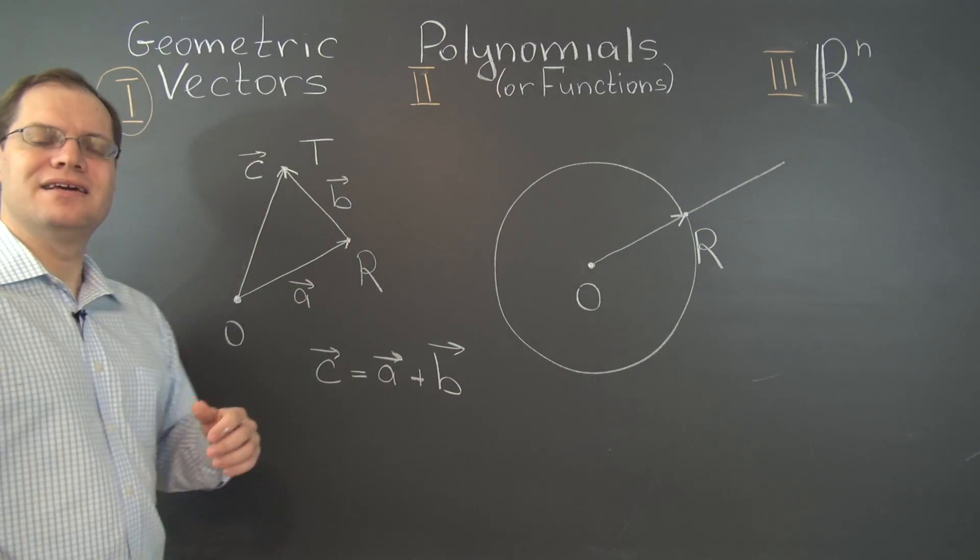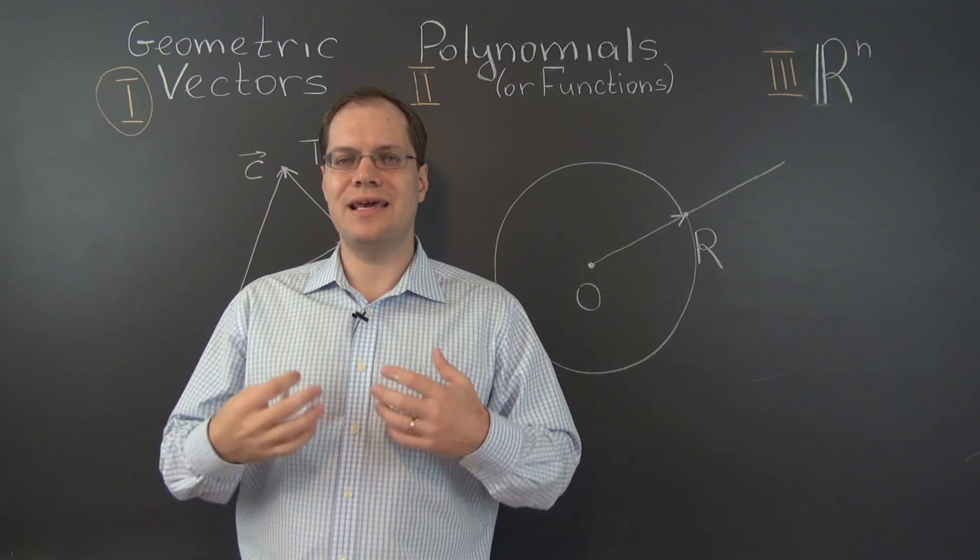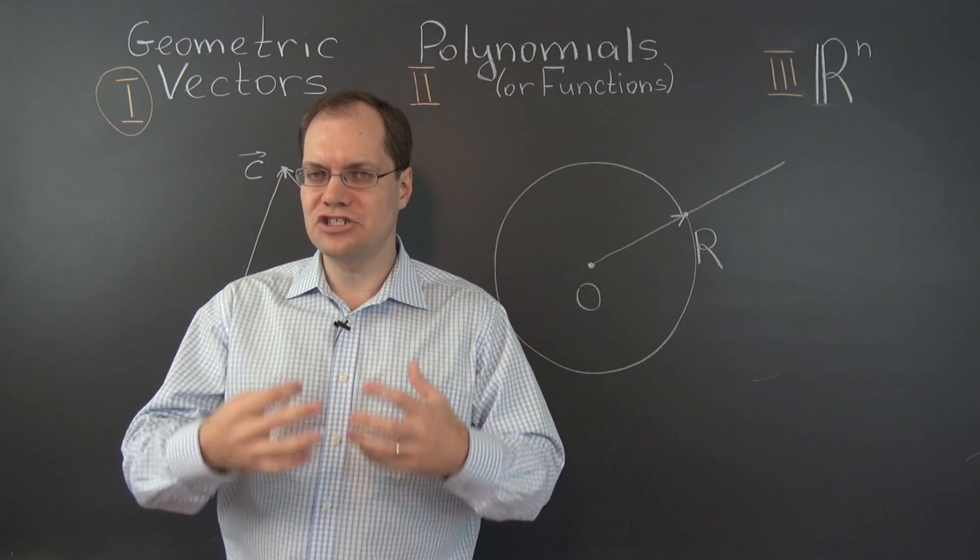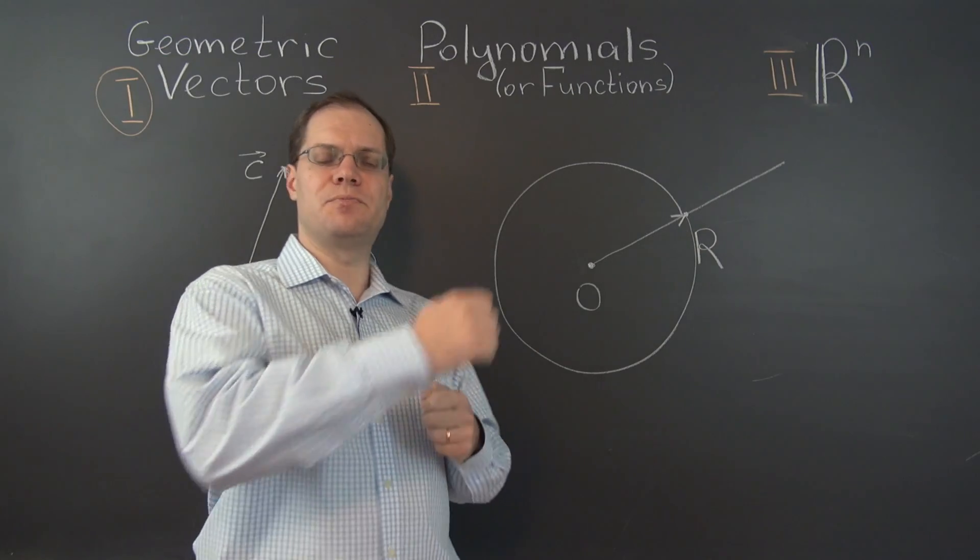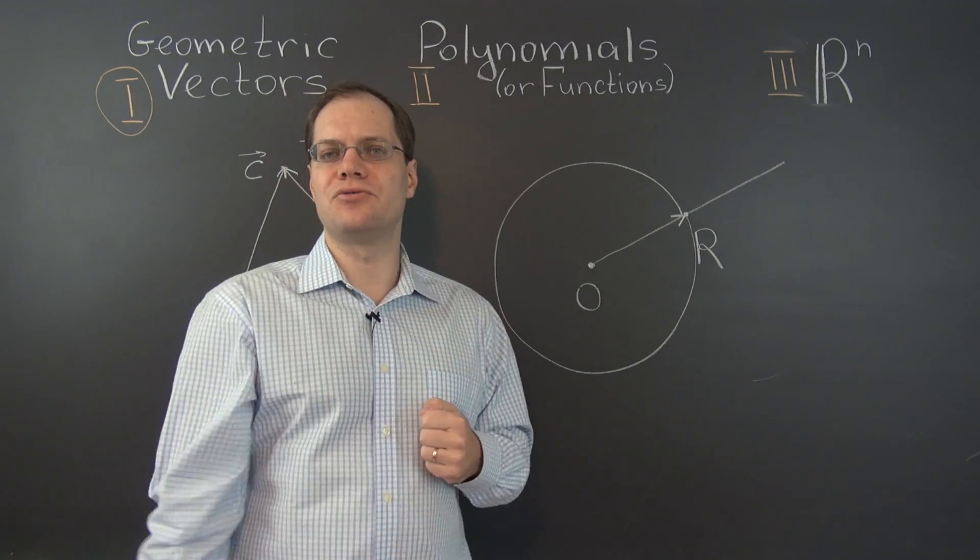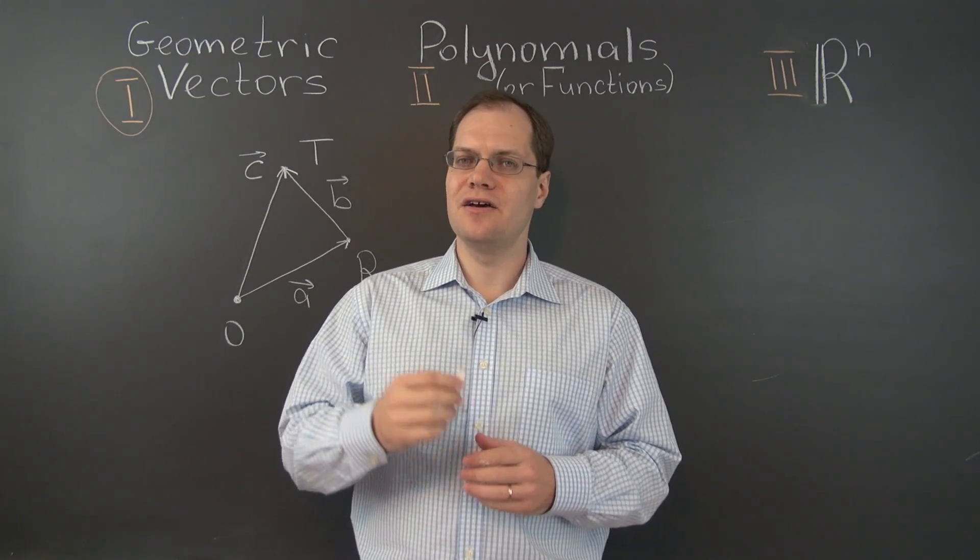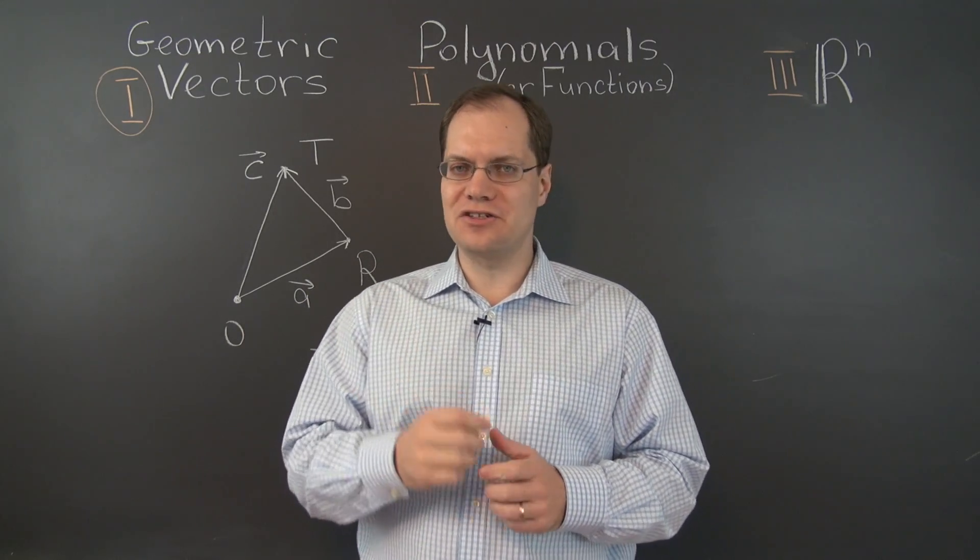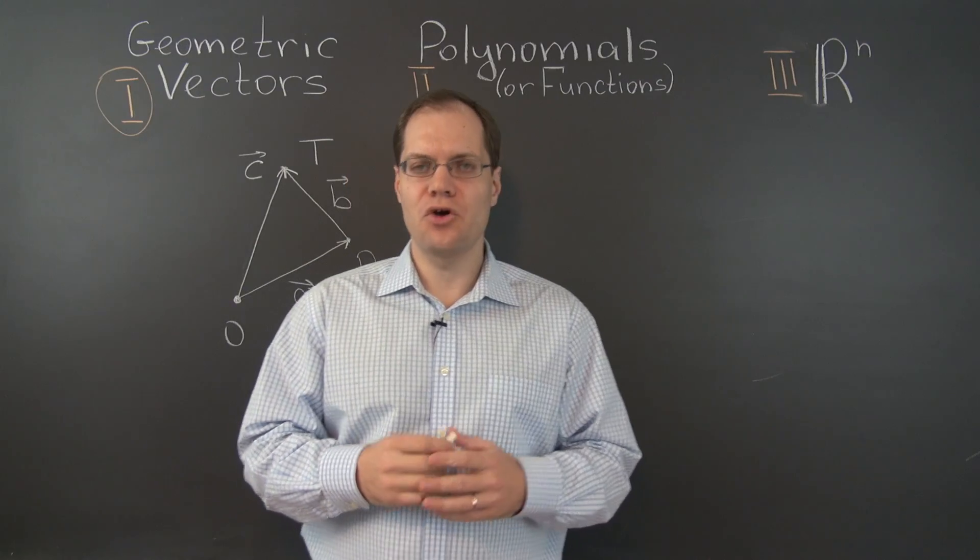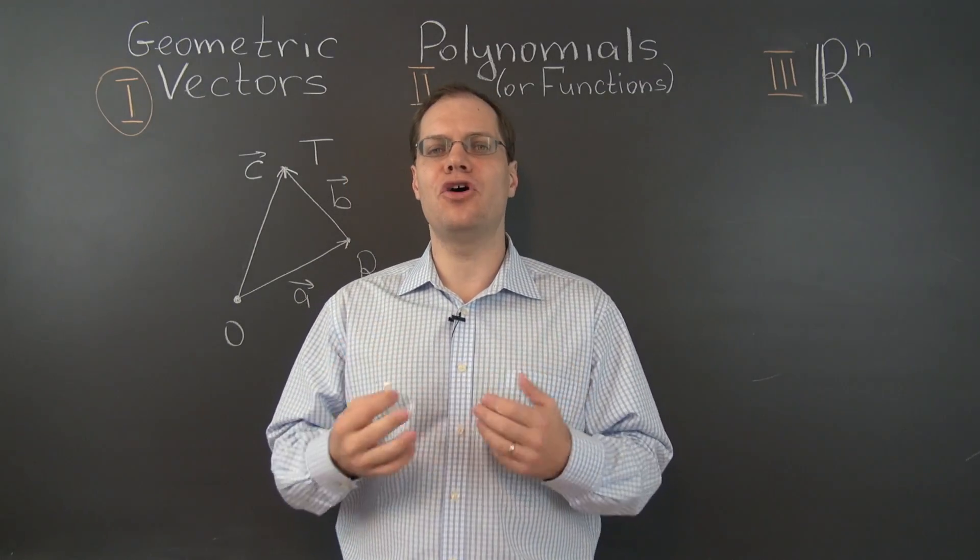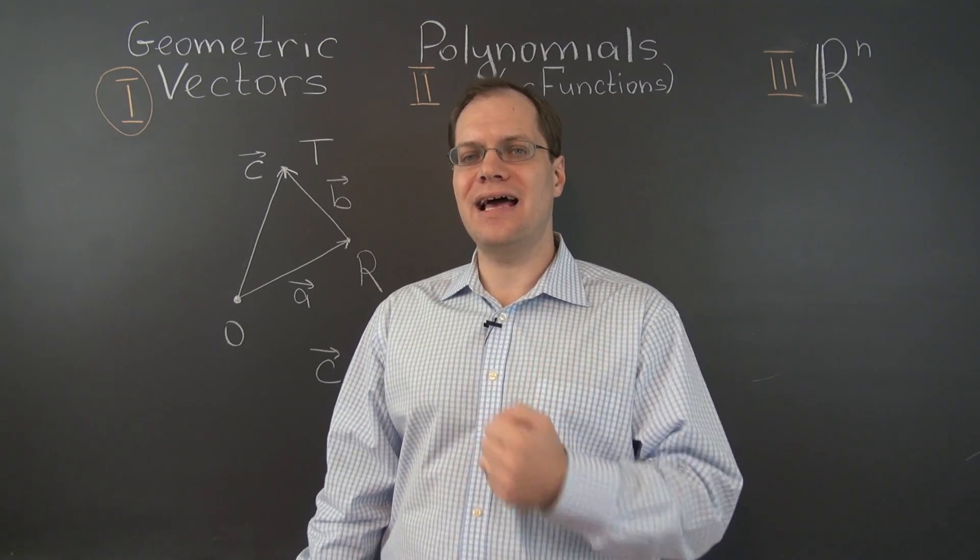A completely natural definition that captures the fact that relating locations, the locations of two points, involves both the distance and the direction. So we're now halfway towards justifying the fact that geometric vectors are vectors in the linear algebra sense. We just have to introduce multiplication by numbers. And that is also done in a completely natural way.